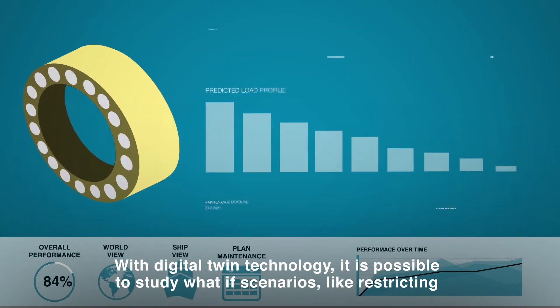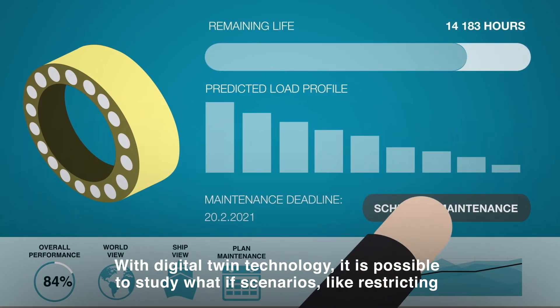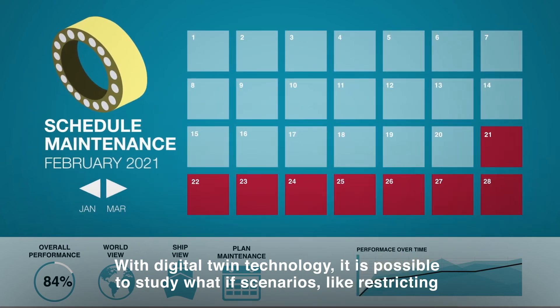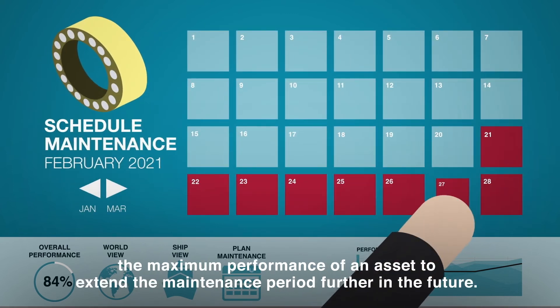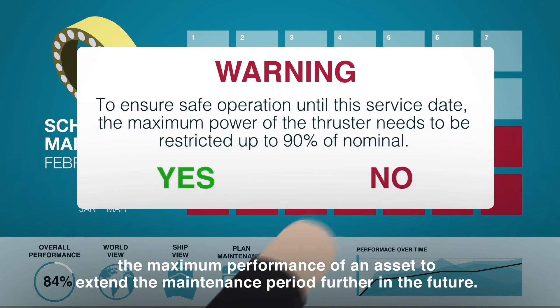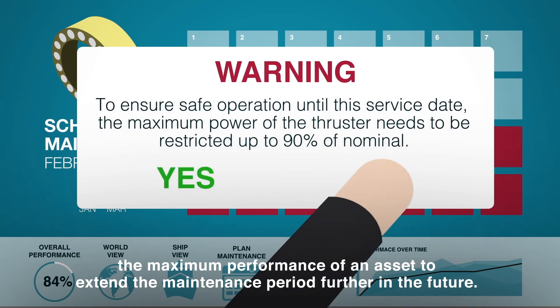With Digital Twin technology, it's possible to study what-if scenarios like restricting the maximum performance of an asset to extend the maintenance period further in the future.